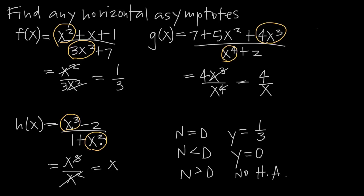This result holds even if the degrees differ by more than 1. For example, if we had x to the 7th in the numerator and x squared in the denominator — a 5-degree difference — we'd end up with x to the 5th, which is not a horizontal line. So if the degree of the numerator is greater than the degree of the denominator, there's no horizontal asymptote. However, if the degree of the numerator is exactly 1 greater than the degree of the denominator, we get a slant or oblique asymptote — in this case, y equals x.